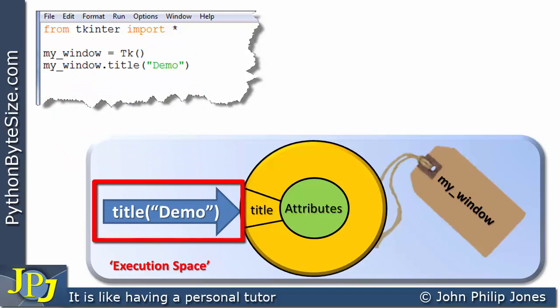You can see that title with the demo in brackets being passed within those double quotes being sent to the object. Now what this is going to do, it's going to invoke this method in the object. And of course this method has been designed such that it's going to alter one of the attributes in this case. And of course the attribute it's going to alter is the title of the window that will be displayed.